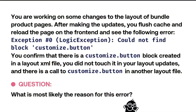Let's take a look at the question for this week. You are working on some changes to the layout of bundle product pages. After making the updates, you flush the cache and reload the page on the front end and see the following error: an exception with the message 'could not find block customize.button.' You confirm that a customize.button block is created in a layout XML file that you did not touch in your layout updates, and there is a call to customize.button in another layout file. What is most likely the reason for this error?